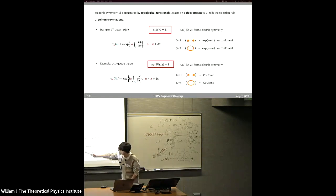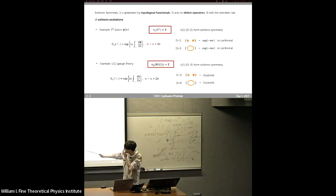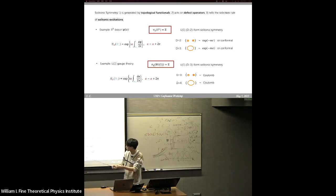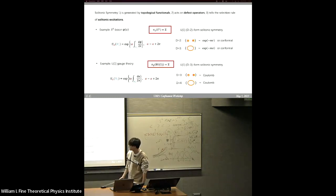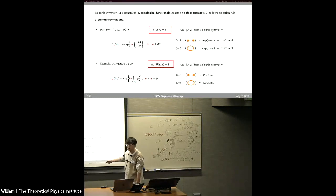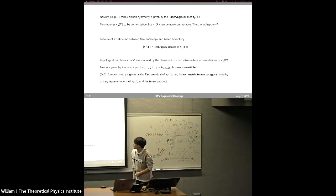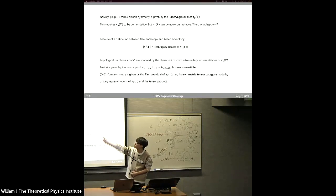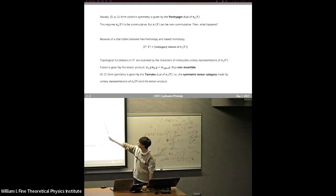Let's consider 3D spacetime as an example. In this case, the charged object is like a monopole defect — or rather the worldline of the monopole. If we increase the spacetime dimension, we will have a worldsurface and so on. According to the previous discussion, we find that the (d-p-1)-form solitonic symmetry is given by the Pontryagin dual of the corresponding homotopy group π_p.